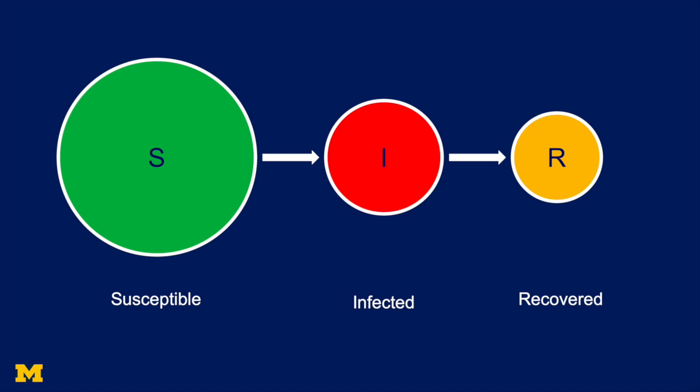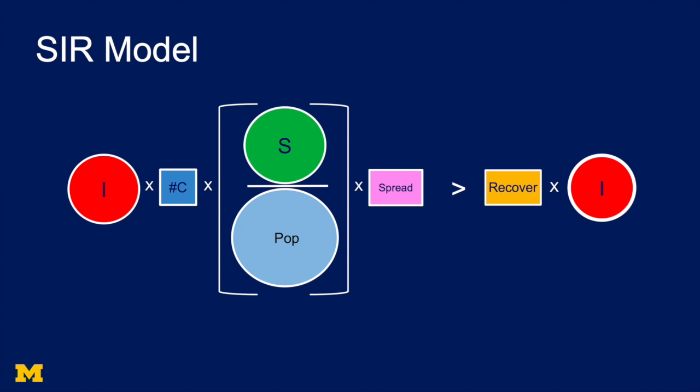To tee up Abby, I want to first remind us of the SIR model. There's a set of susceptibles — they can become infected, and then they recover. The model says an infected person has contacts (that's the C). Those contacts with some probability are susceptible people, that's S over the whole population. If an infected person meets a susceptible person, there's some probability it spreads. If the number of contacts times the probability of meeting someone susceptible when it's spreading is bigger than the probability of the infected person recovering, the disease is going to spread. If not, the disease will stop spreading. The whole goal is to make the left-hand side of that equation smaller than the right-hand side.